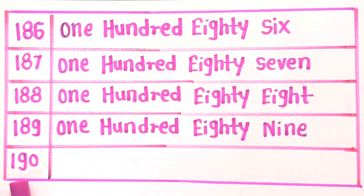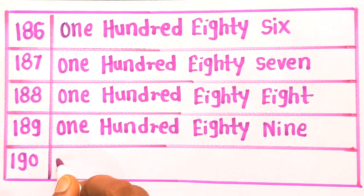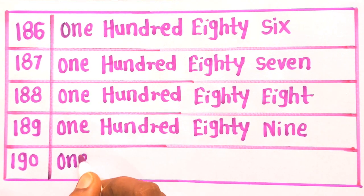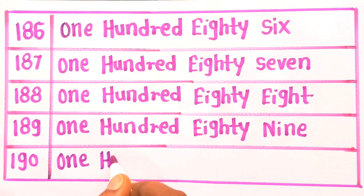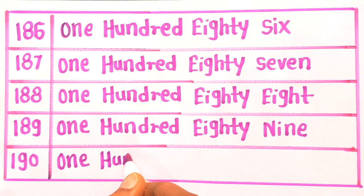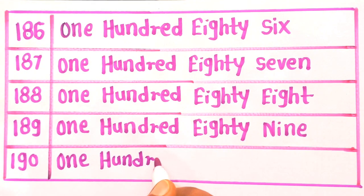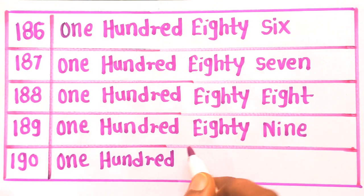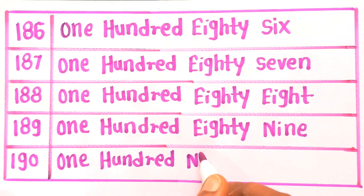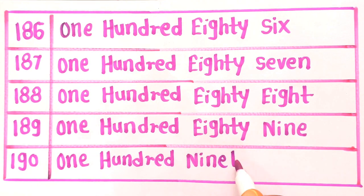And next number is 190: O, N, E — 1. H, U, N, D, R, E, D — 100. N, I, N, E, T, Y — ninety. One hundred ninety. 190.